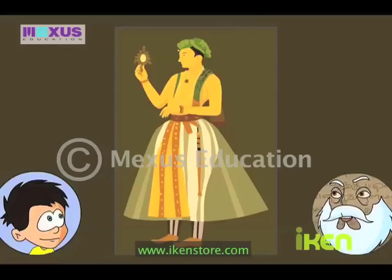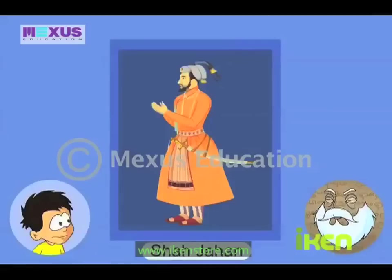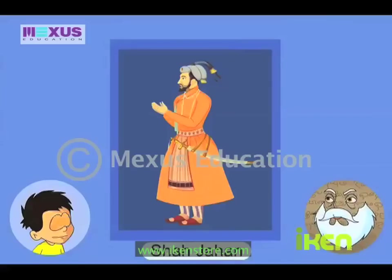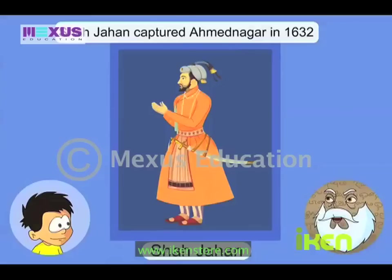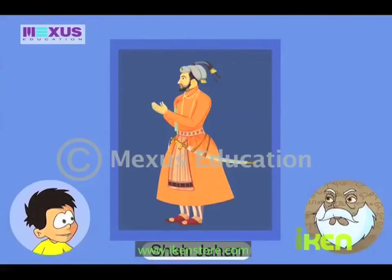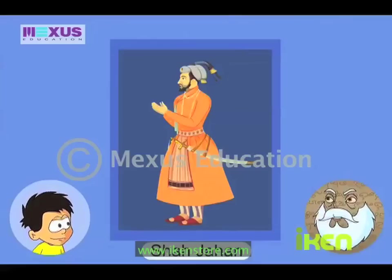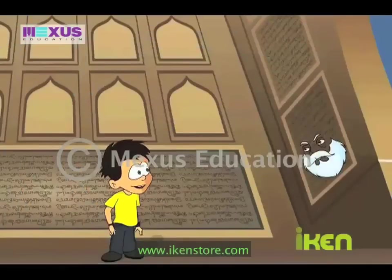Same story again! Mughal campaigns continued under Shah Jahan — he launched campaigns both in the northwest and in the Deccan. In the Deccan, the Bundelas were defeated and Ahmednagar was captured in 1632. In the northwest, Shah Jahan was not so successful — he failed to defeat the Uzbeks. What about his son — did he revolt too?